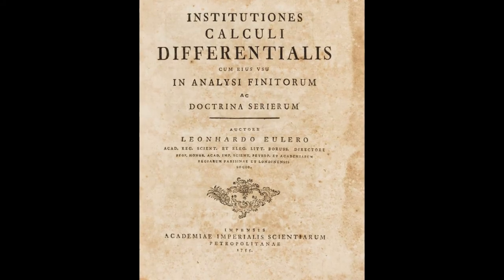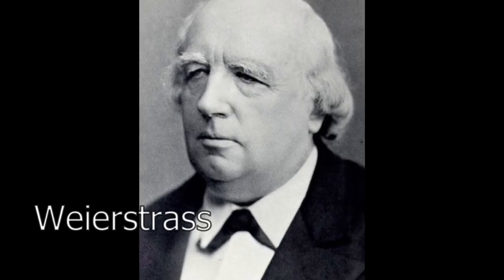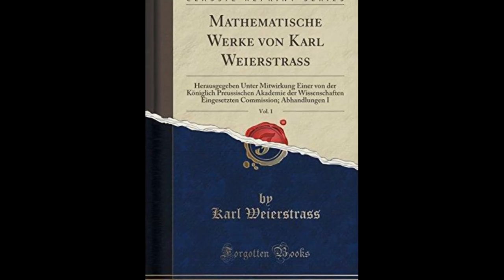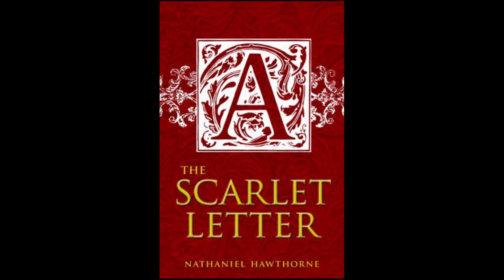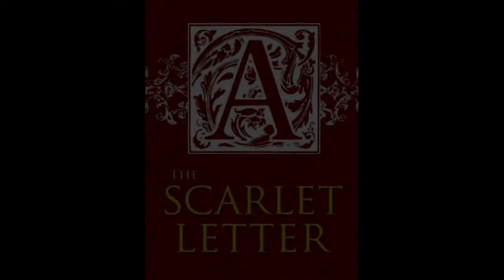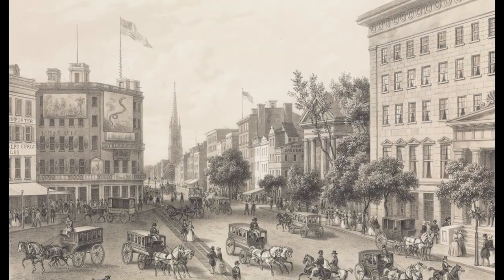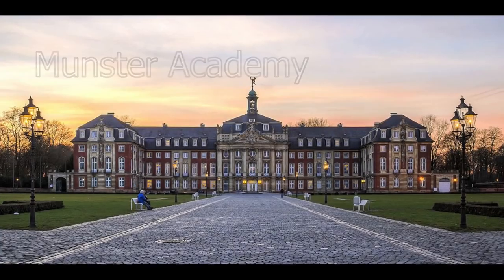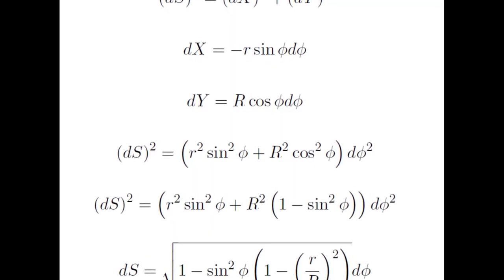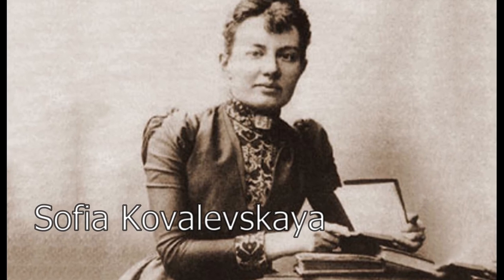The very clever trig substitution was first developed in primitive form by genius number one, Euler, in 1755. It was number-eight-ranked Weierstrass who polished it into its current form around 1850 — coincidentally the same year The Scarlet Letter was released. This is the very last chronological discovery in BC Calculus and Calc 2. Weierstrass was actually a high school teacher at the time and later supervised 46 PhDs, including the first female math PhD ever — a Russian mathematician named Kovalevskaya.